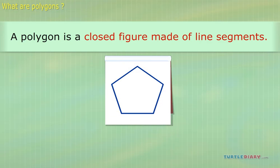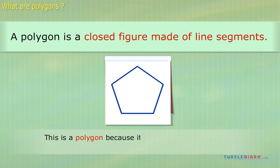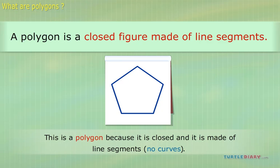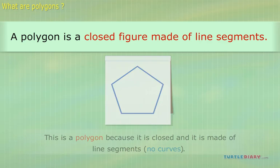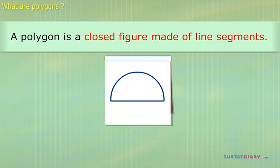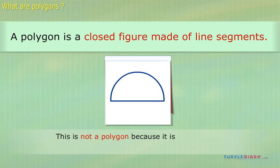Is it a polygon? Yes. This is a polygon because it is closed and it is made of line segments. No curves. Is it a polygon? No. This is not a polygon because it is not made of line segments.